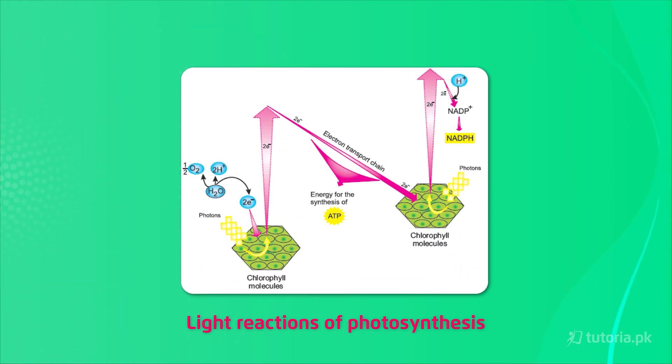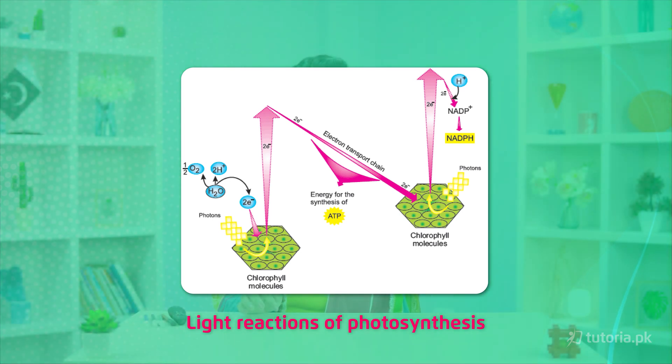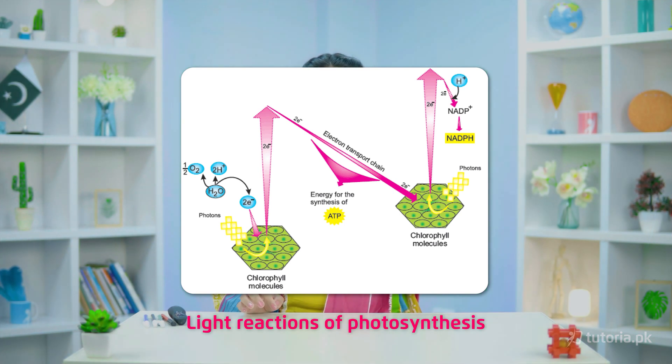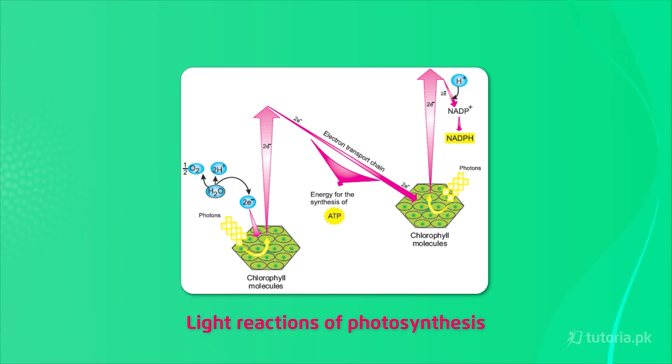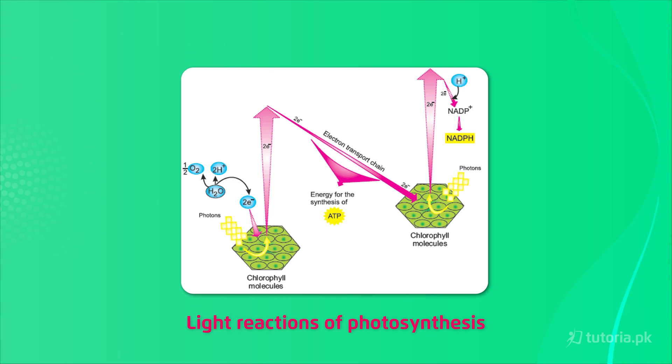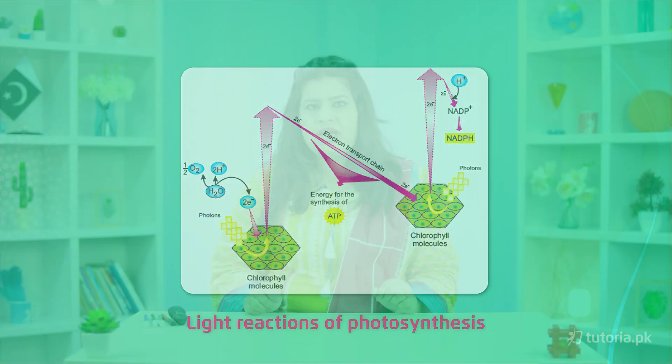We call the second phase dark reactions, also known as the Calvin cycle. In light reactions, chlorophyll molecules absorb light and their energy levels increase, causing electrons to be emitted. These electrons enter the electron transport chain, where there are different donors, receptors, and carriers. When electrons move from one molecule to another, ATP is created. Additionally, photolysis occurs in light reactions, releasing oxygen and hydrogen ions.